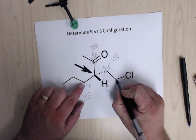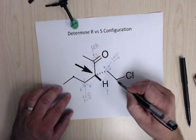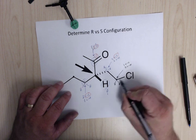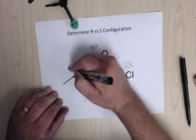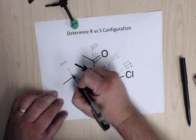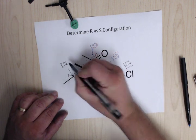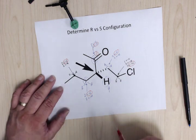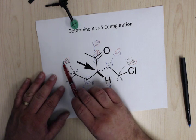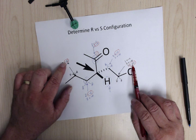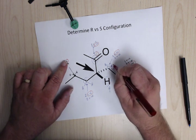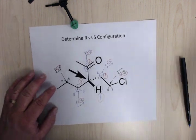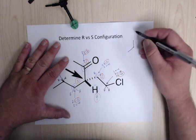The remaining two groups both have two carbon-carbon bonds, so it's still a tie — go out one further. One chain has one C–C bond, two C–H bonds, and one C–Cl bond. The other has two C–C bonds and two C–H bonds. Comparing the heaviest single bond: C–Cl beats C–C, so the chain with chlorine is priority 2 and the other is priority 3. Rewrite with just the numbers to clean things up: 1, 2, 3, 4.